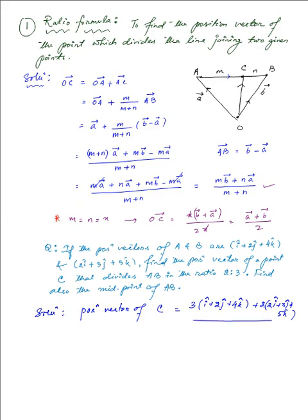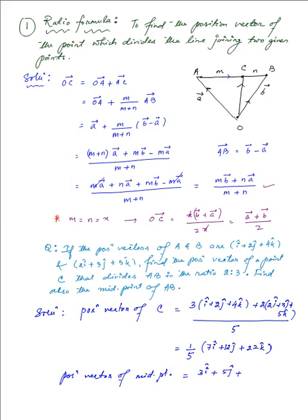With M plus N equal to 5, we compute 3 times (i + 2j + 4k) plus 2 times (2i + 3j + 3k), all divided by 5. For the midpoint, since it divides AB in equal parts, we simply add the two vectors and divide by 2, which gives (3i-cap + 5j-cap + 9k-cap) divided by 2 as the position vector of the midpoint.